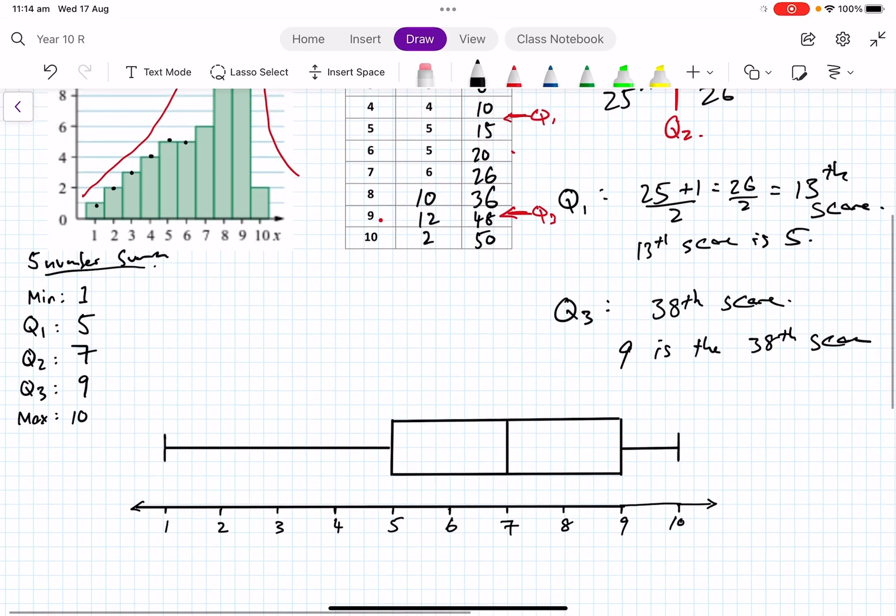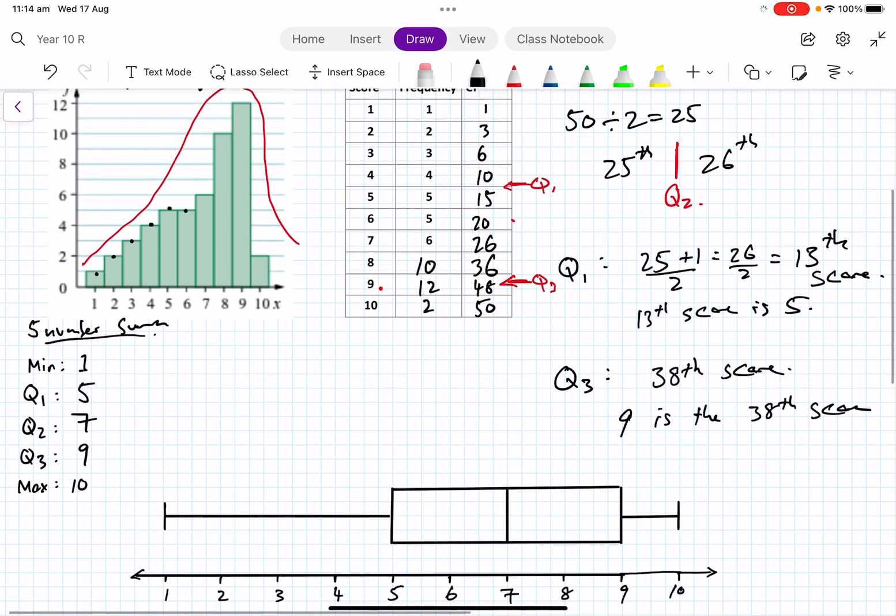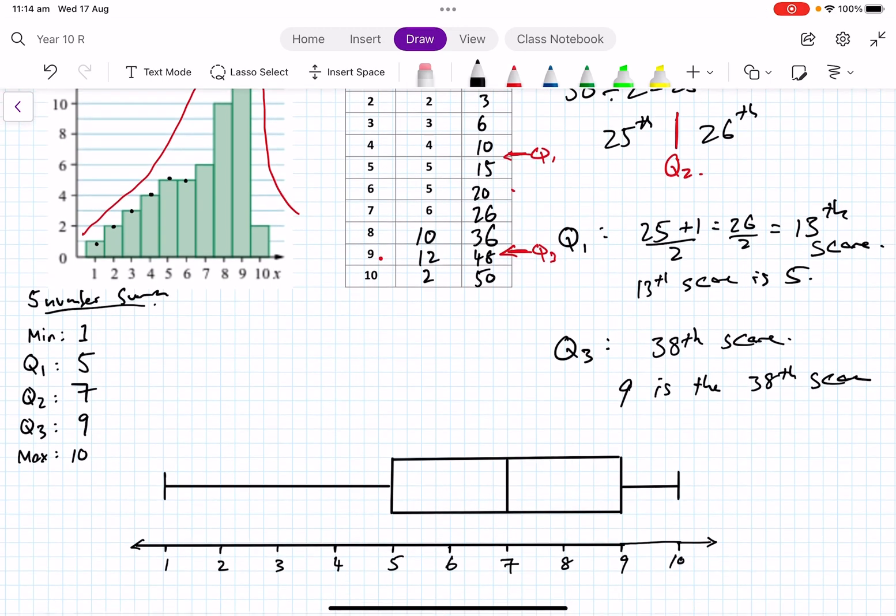Now the histogram had a skewness towards the upper part and you see that. You see the long tail here. This part has 25 percent between one and five. Well, this section here between nine and ten also has 25. You see how this is more spread out here than it is in this section.